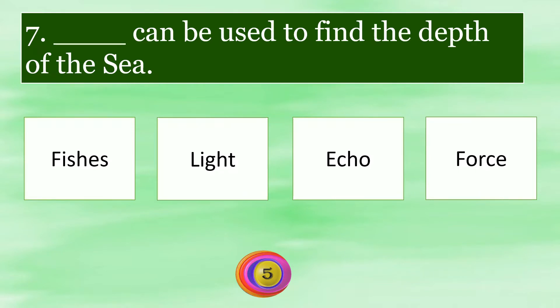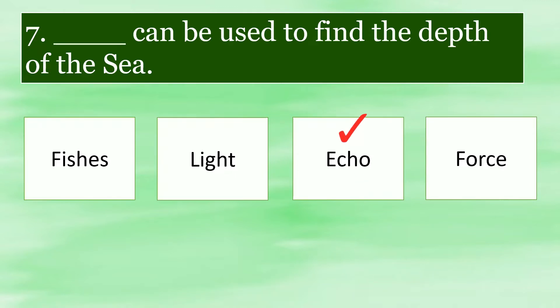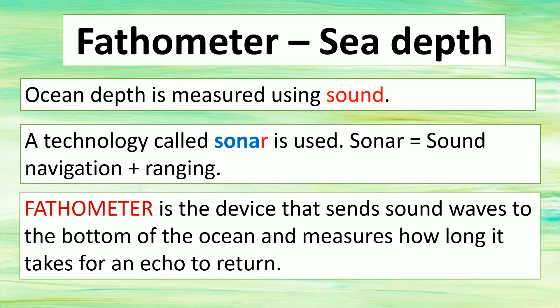Echo can be used to find the depth of the sea. Ocean depth is measured using sound through a technology called SONAR — Sound Navigation and Ranging. A fathometer is the device that sends sound waves to the bottom of the ocean and measures how long it takes for an echo to return.